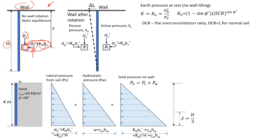Let's look at this example where, for some reason, this wall actually moves - it rotates. If it moves away from the soil mass in this direction to the left-hand side, then on the right-hand side there will be active pressure acting on this wall, and on the left-hand side there will be passive pressure - that's the pressure acting against the wall.